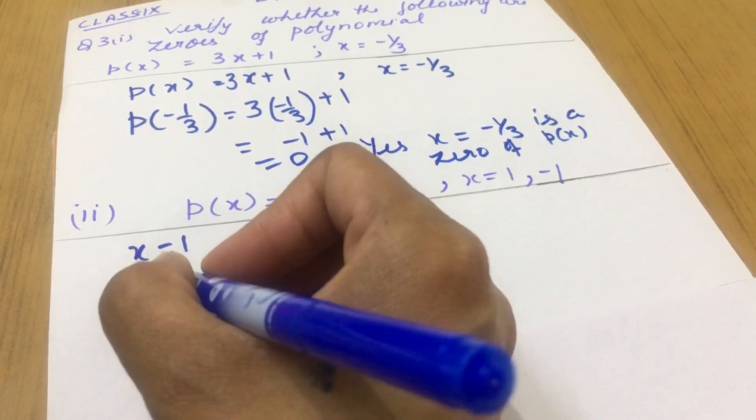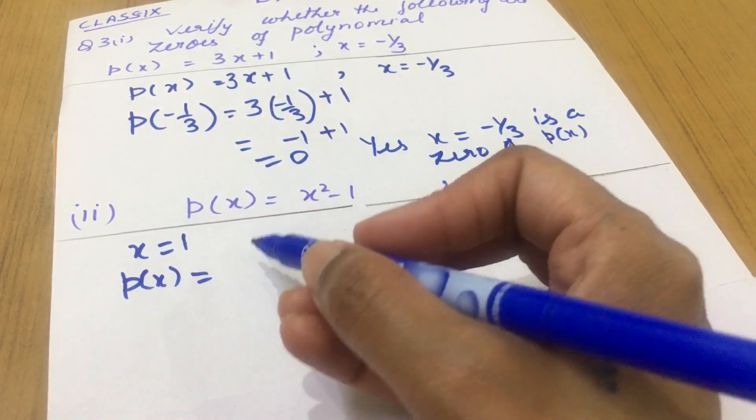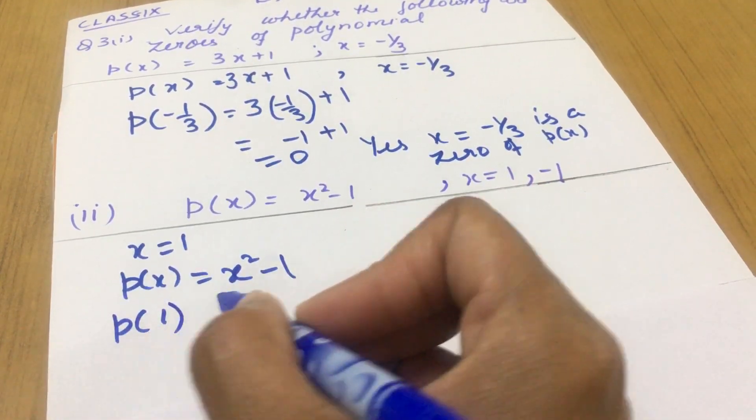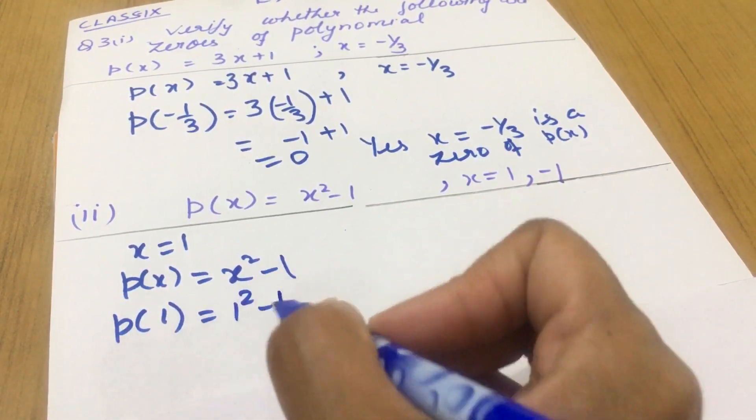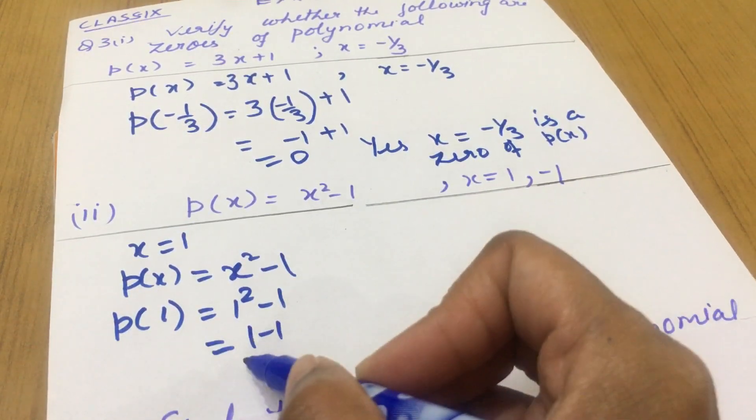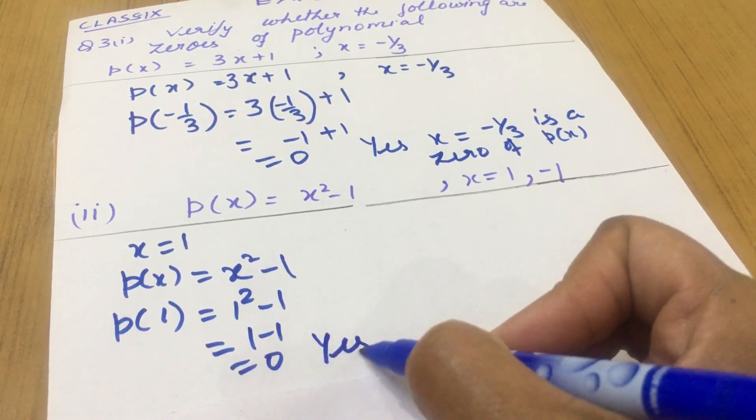So p(x) equals x square minus 1. I will substitute x as 1 and 1 square minus 1. We all know 1 square is 1, 1 minus 1 is 0. So you will write down yes, x equals to 1 is a zero of p(x).